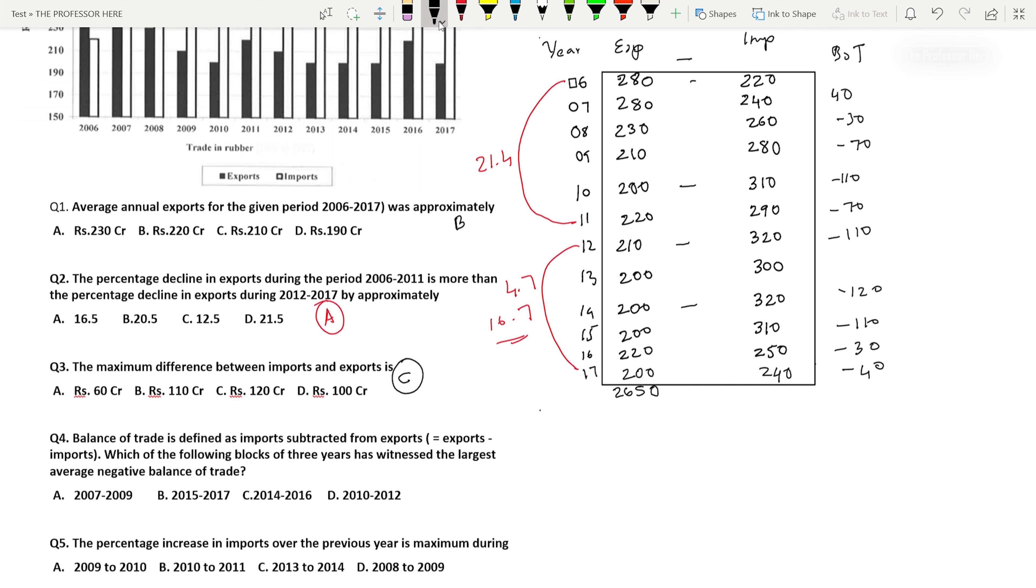Now we have found the balance of trade, export minus import for each year. You must have noticed that in the question it's given as three-year blocks. We don't have to find the average because all of these are three-year blocks divided by three. Option A, 2007 to 2009: 40 minus 30 minus 70 equals minus 60. If you look at the options, 2010 to 2012 is the largest: minus 110 minus 70 minus 110 equals minus 290. You can check others, none is greater than minus 290. So 2010 to 2012 has witnessed the largest average negative balance of trade. Option D is the answer.